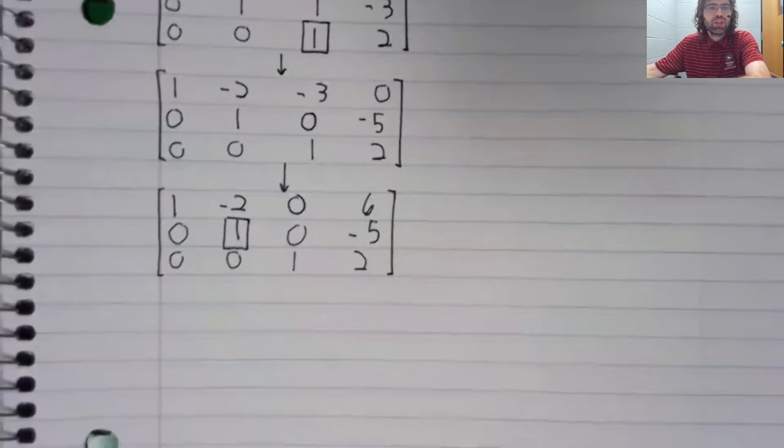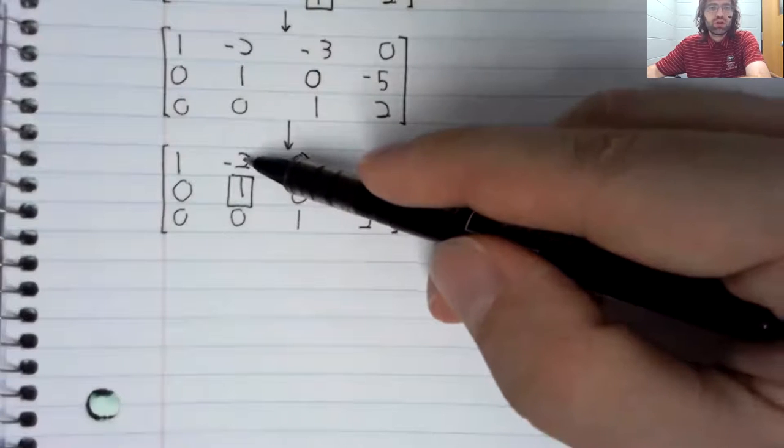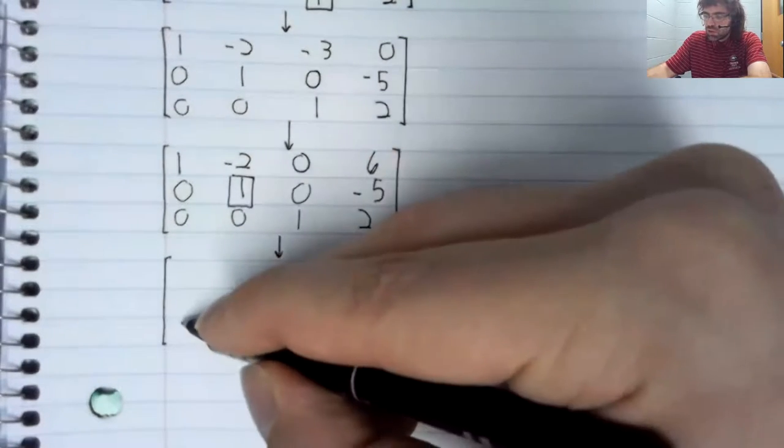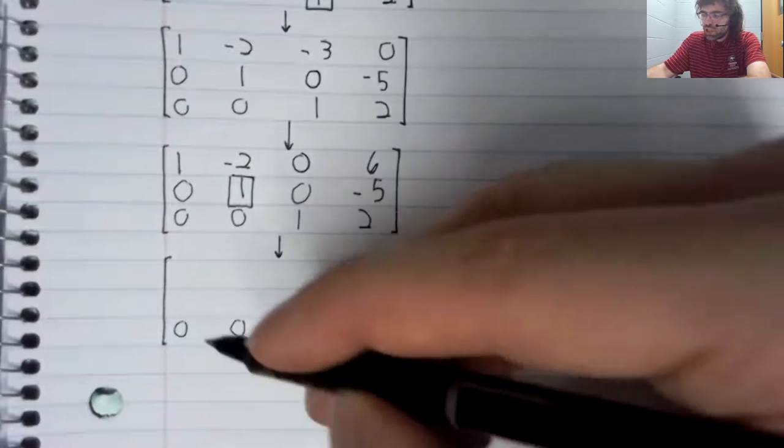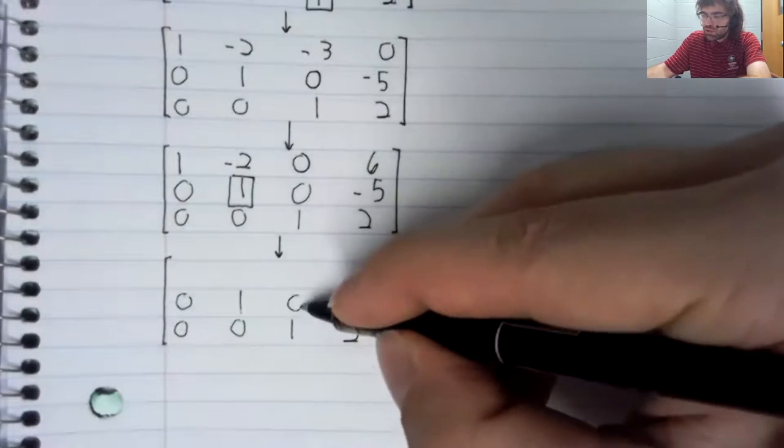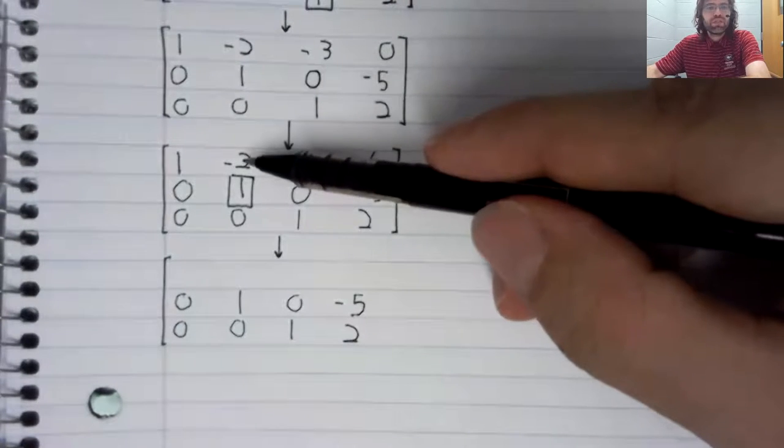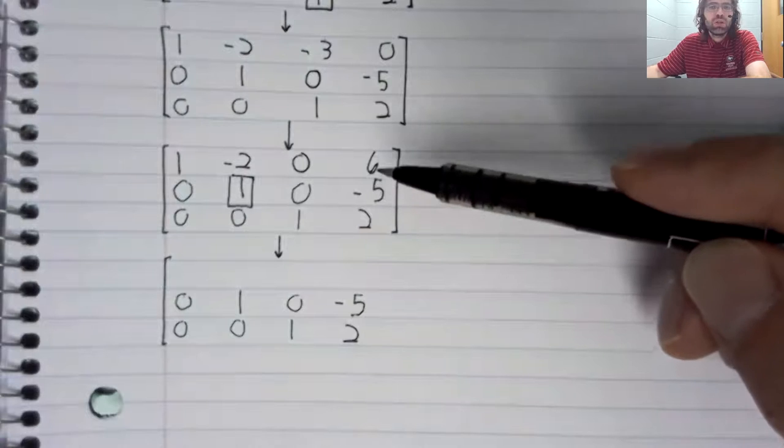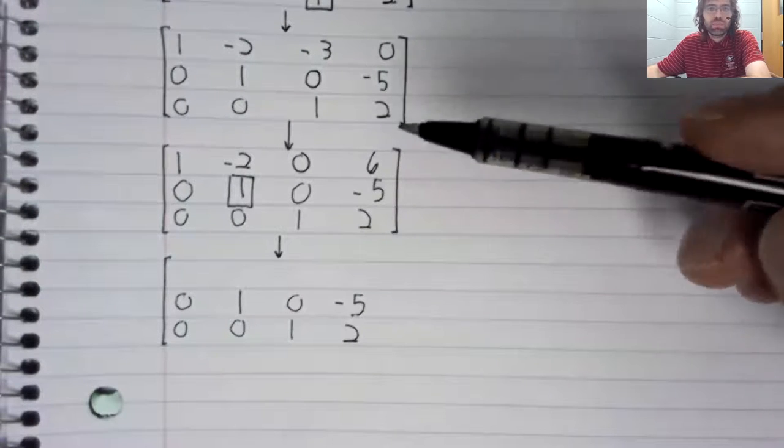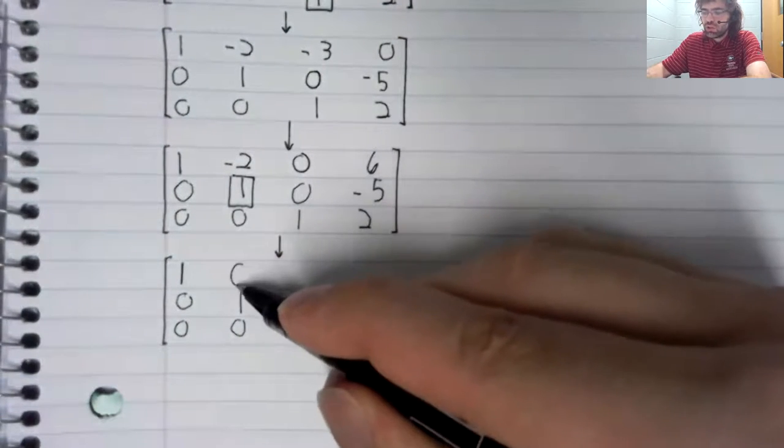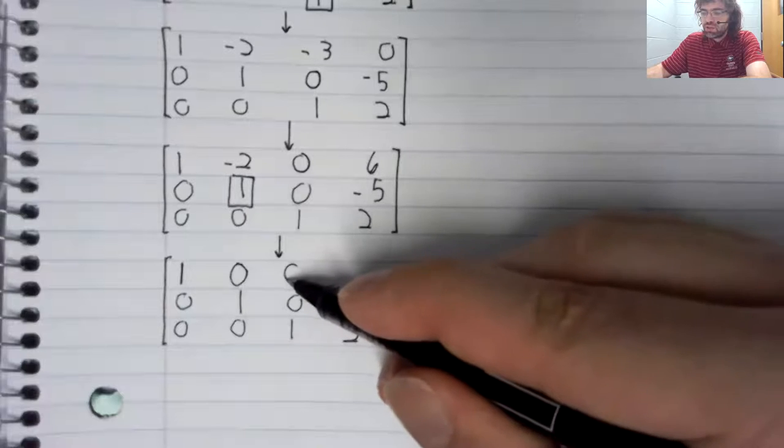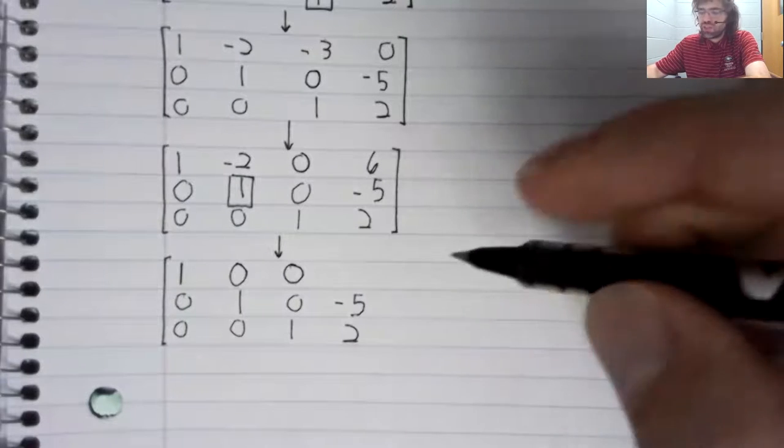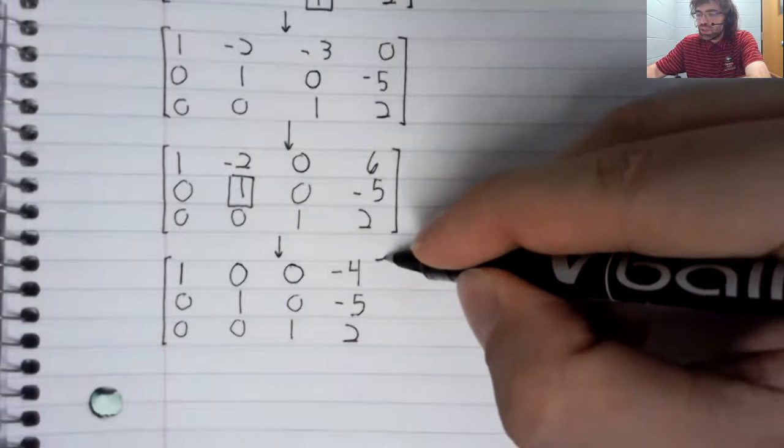Move up and to the left. And now we'll use this one to turn this to zero. So the third row isn't changing. The second row isn't changing. To get rid of this negative two, we need a positive two. So the second row times two plus the first row. This doesn't change. This turns to zero. This doesn't change. Negative five times two is negative ten plus six is negative four.